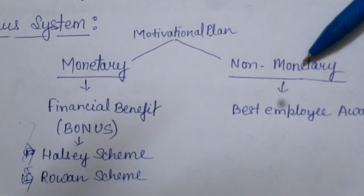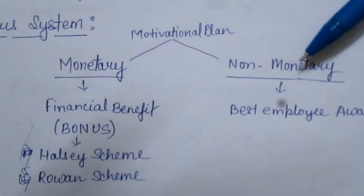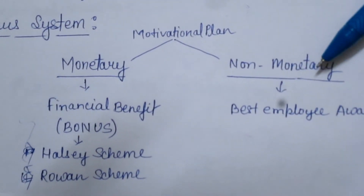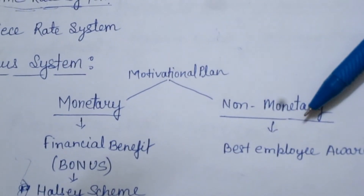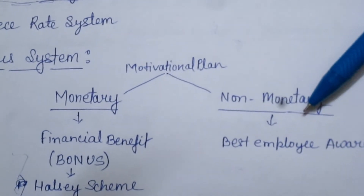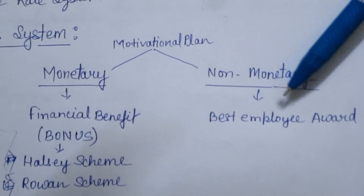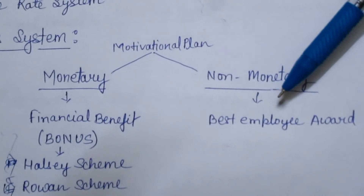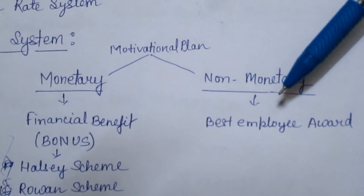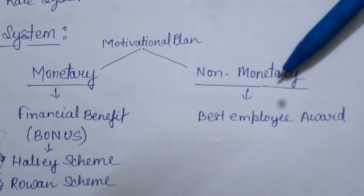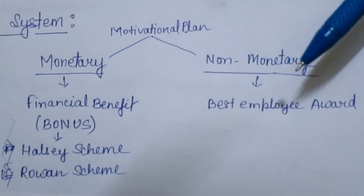Non-monetary motivational plan क्या होता है? For example, आप एक best employee का award रख सकते हैं — यह non-monetary है. इस award को पाने के लिए employees अच्छा perform करेगा, hard work करेगा ताकि वो इस award को हासिल कर सके. जैसे student of the year में best student award मिलना होता था, वैसे ही Company में भी यह policy लाई जाती है.